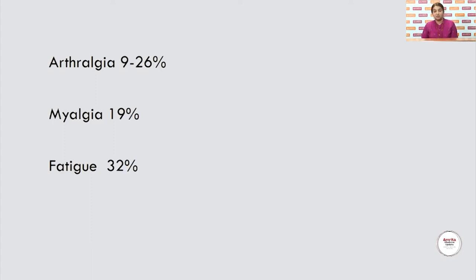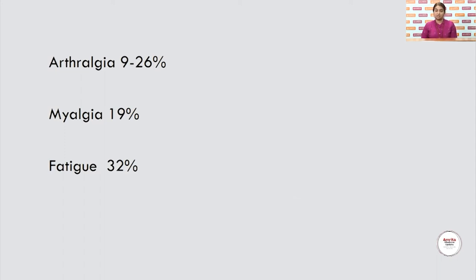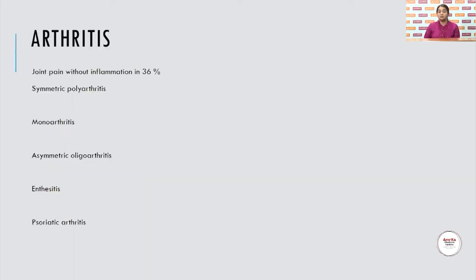The common manifestations which bring patients to rheumatology are arthralgia, myalgia, and fatigue. Arthralgia is generally seen in about 26% of patients, myalgia in about 19%, and fatigue in 32%. Many progress to a chronic fatigue state. Arthralgia is usually not seen in isolation — it is typically an arthromyalgia. Joint pains without inflammation are seen in about 36% of patients. They can present as symmetric polyarthritis, monoarthritis, asymmetric oligoarthritis, enthesitis, or even psoriatic arthritis.